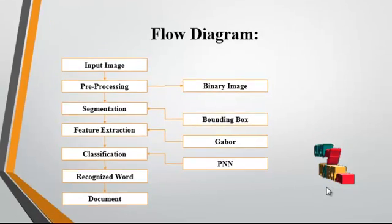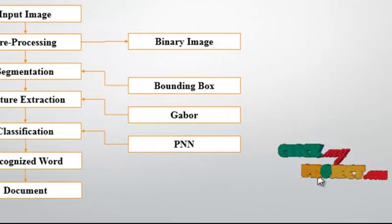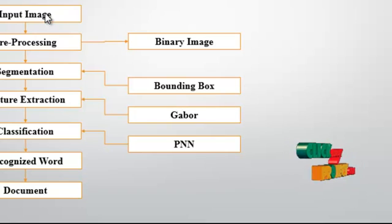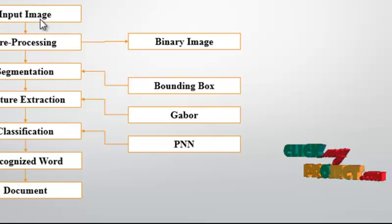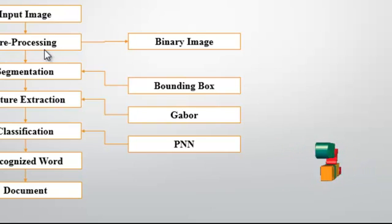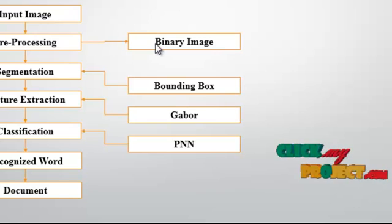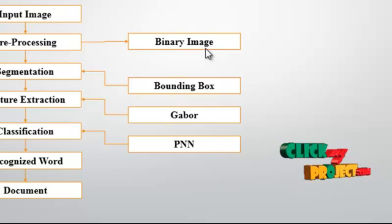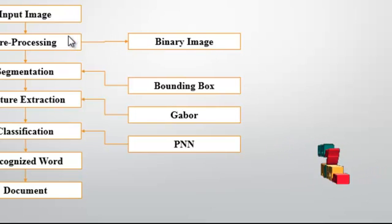Now we discuss the flow diagram for the process. First, the input image is taken from the dataset. Then the input image undergoes pre-processing. In the pre-processing, the first step is binary conversion — the input image is converted into binary form.